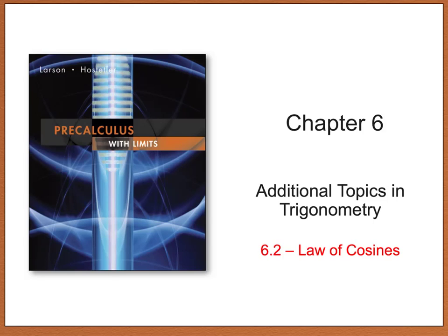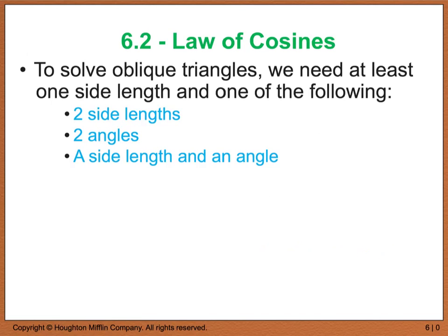Hello and welcome back to chapter 6. Today we're going to look at section 6.2, which deals with the law of cosines. As we talked about back in section 6.1, we are in the process of solving oblique triangles, which means we do not have a right angle.